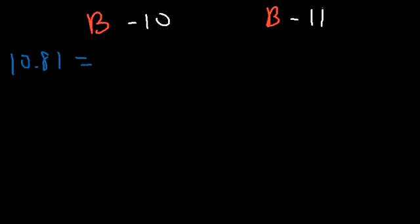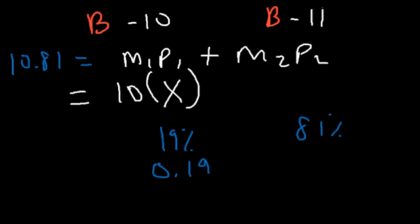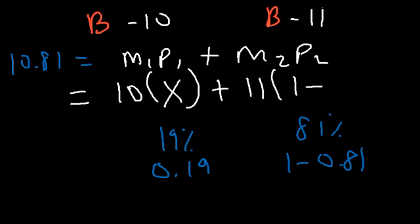So we're going to use the same equation, M1P1 plus M2P2. Now the mass of the first isotope is 10. Now we're looking for the percentage, or the relative percent abundance for the first isotope, so let's call it X. So I noticed that the percentage, which was 19% and 81%, these add up to 100.